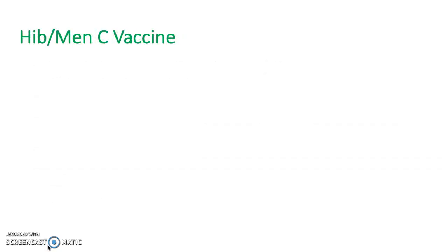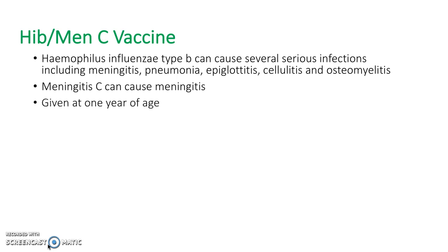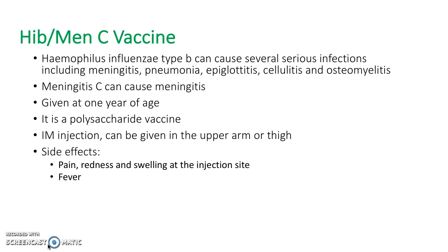The next vaccine is the combined Hib and MenC vaccine, which provides immunity against Haemophilus influenzae and meningitis. It is given at 1 year of age and can either be given in the upper arm or thigh depending on the child. As well as the usual side effects, there is the possibility that this vaccine can cause a skin rash.